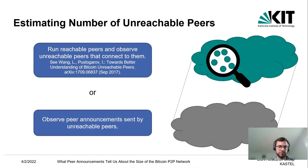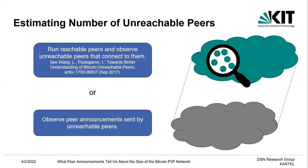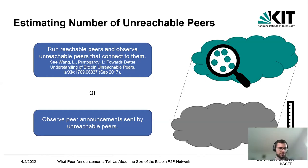An alternative approach is to observe effects caused by unreachable peers and then infer the number of unreachable peers from these observed effects — like measuring the shadow of a cloud to estimate the size of the cloud. This approach can be done by observing peer announcements sent by unreachable peers, and this is the approach we use for this talk.